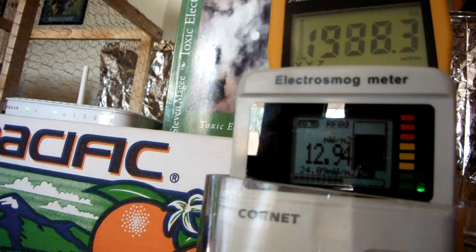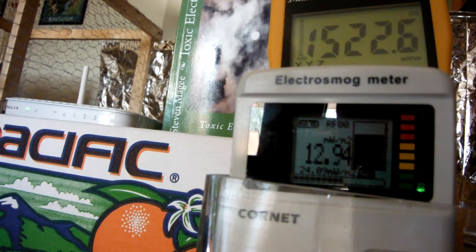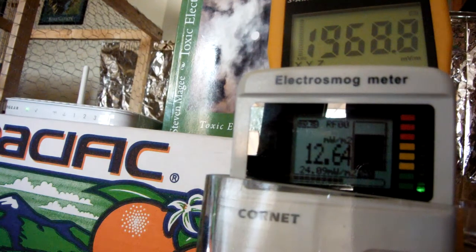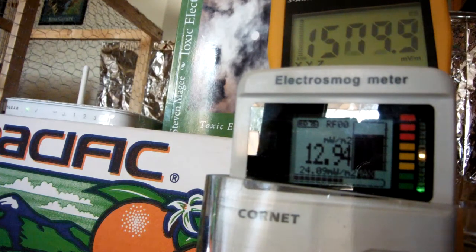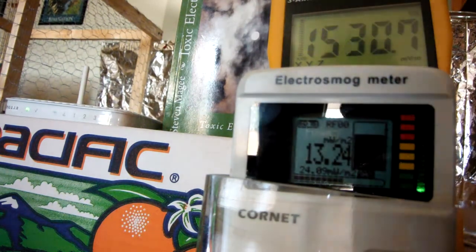The top one's reading millivolts per meter and the bottom one is reading milliwatts per meter squared. We're going to start off with a Mylar film cage. It's also known as space blankets.